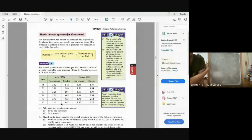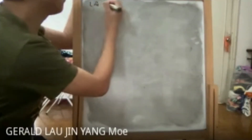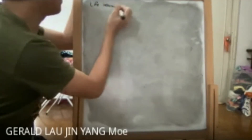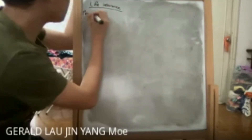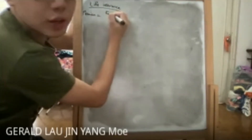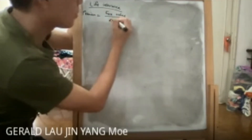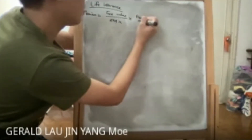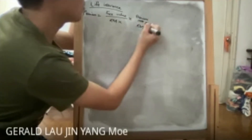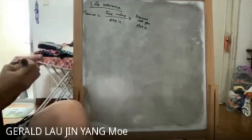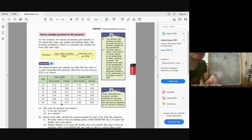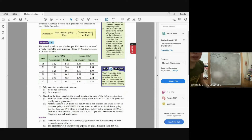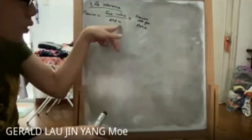Now we learn how to calculate premiums for life insurance. The formula is: Premium = (Face Value ÷ RMx) × Premium Rate per RMx. Looking at the annual premium schedule per RM1,000 — where RMx = RM1,000 — you can see rates differ by age, gender, and whether the insured is a smoker or non-smoker. The premium rate increases with age because life expectancy decreases, and smokers have a higher rate due to greater illness risk.